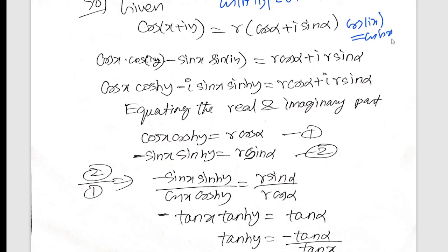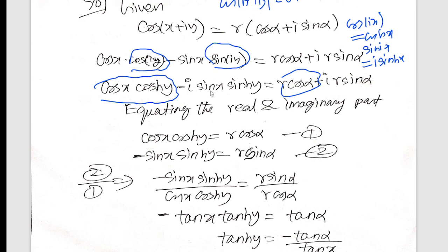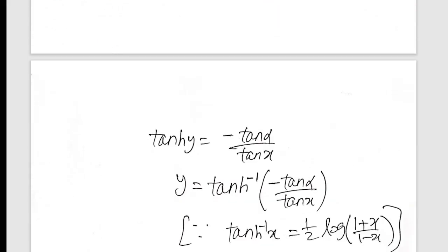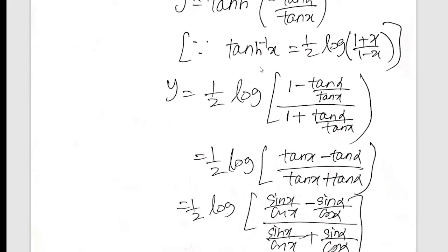cos(ix) equals cosh(x), and sin(ix) equals i·sinh(x), so front terms cancel. So cos(hx) and sin(hy) front with i. So this is the answer. So tanh inverse x, tanh inverse — cos thesis sin — tanh inverse requires 1 by 2 log(1 plus x); this is the formula.